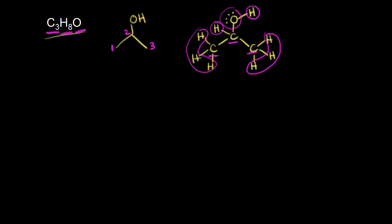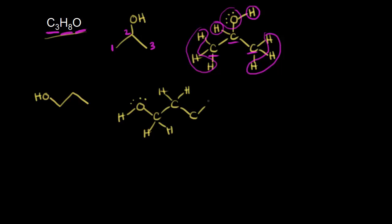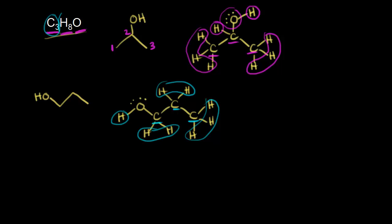Let's draw three carbons with the OH group coming off of carbon one. The carbon on the left is bonded to the oxygen, which is bonded to a hydrogen, with lone pairs on the oxygen. Adding C-H bonds: this carbon needs two, the next carbon also needs two, and the carbon on the end needs three. Counting up: one, two, three carbons (C3). Three hydrogens plus two is five, plus two is seven, plus the hydrogen on oxygen is eight. So C3H8O is the molecular formula for this second structural isomer.